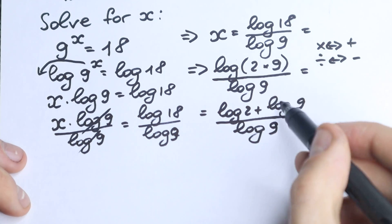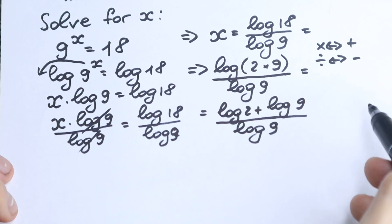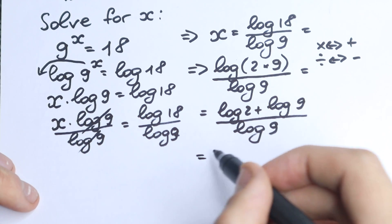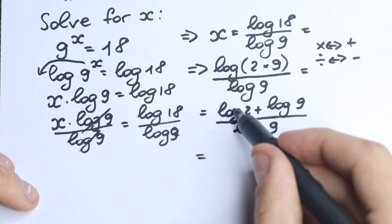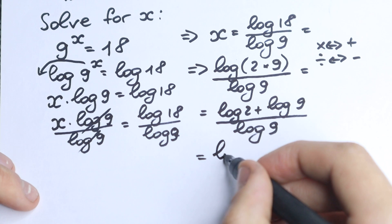I hope you understand this step. This is a log property—I hope you know it, this is a really important property. Now let's divide each element by log(9) separately. We have log(2)...